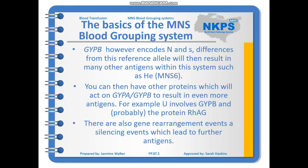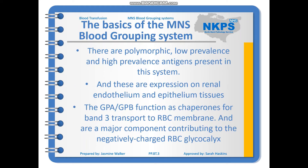If you think back to A-levels or university genetics and consider all the different types of genetic changes — silencing, insertion, deletion events — this is how you end up with the 50 different antigens coded for in the MNS blood grouping system. The system contains polymorphic, low prevalence, and high prevalence antigens.